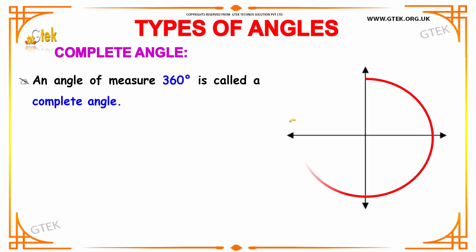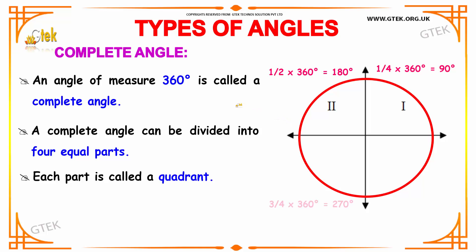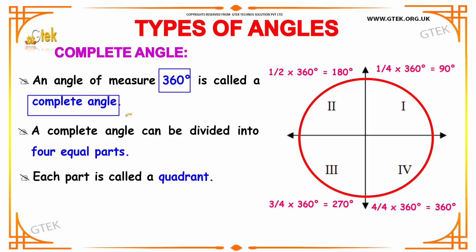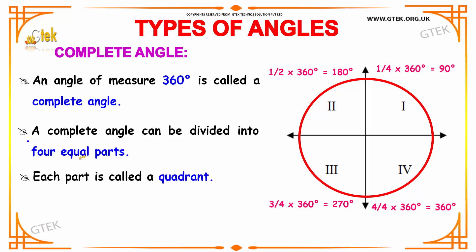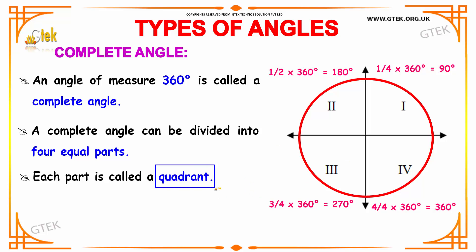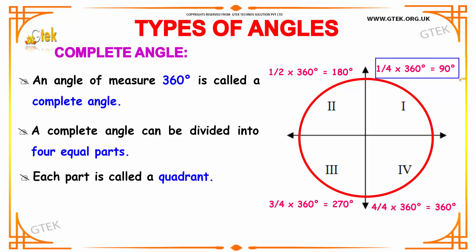Next we are going to study about complete angle. If an angle is of the measure 360 degrees, then it is said to be a complete angle. The complete angle can be divided into four equal parts — the first part, the second part, the third and the fourth part — and each part is called a quadrant, because each part is one of the four total parts. Your first quadrant is one-fourth of 360, which is 90 degrees.